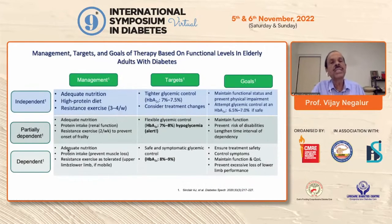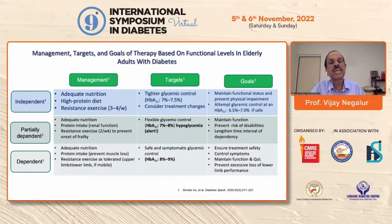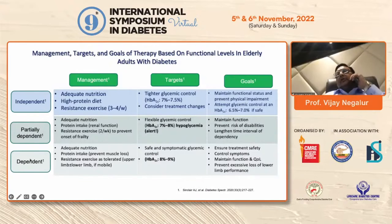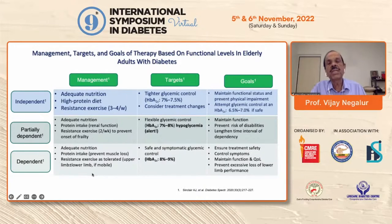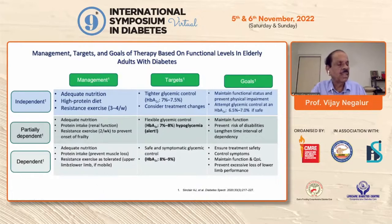In summary for management: for independent patients, ensure adequate nutrition, a high-protein diet, resistance exercises, and tight glycemic control if otherwise healthy with no comorbid conditions and no hypoglycemia risk. For partially dependent patients, nutrition and protein intake are important to prevent muscle loss; resistance exercise twice a week maintains muscle mass, with flexible glycemic control of 7% to 8%. For totally dependent patients, protein intake to prevent muscle loss, a flexible HbA1c of 8% to 9%, ensuring treatment safety, controlling symptoms, maintaining quality of life, and preventing excessive loss of lower limb performance.